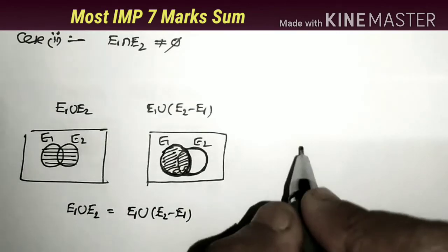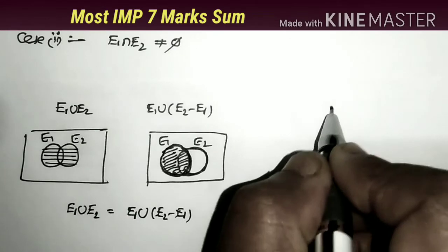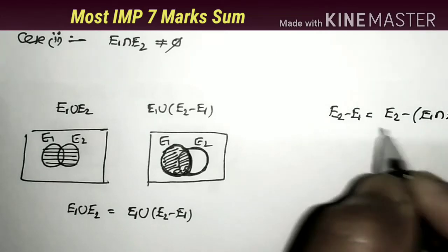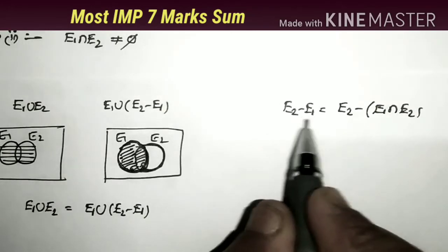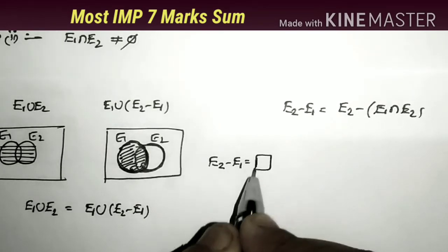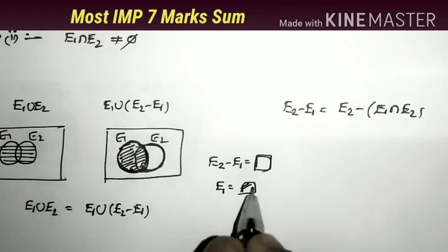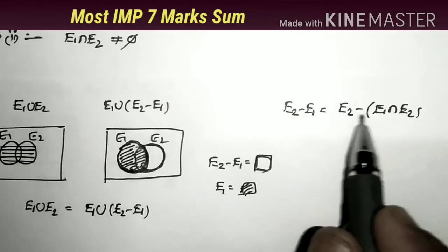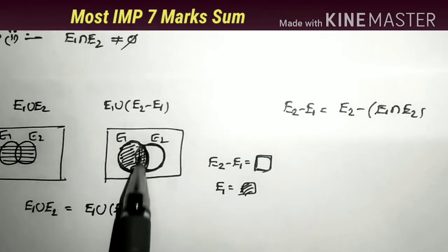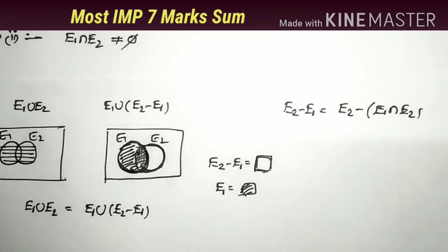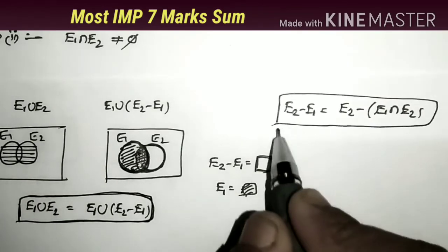Formula 2: E2 - E1 = E2 - (E1 ∩ E2). From the Venn diagram, E2 - E1 is the part of E2 not covered by E1. E1 ∩ E2 is the overlapping region. Subtracting E1 ∩ E2 from E2 also gives the same remaining blank part. So both E2 - E1 and E2 - (E1 ∩ E2) represent the same region. These two formulas are essential to solve Case 2.